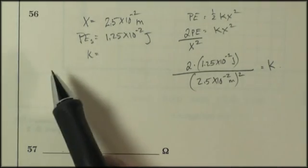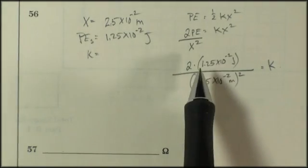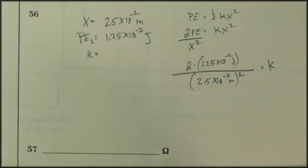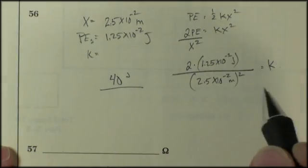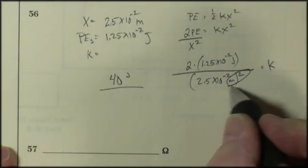All of this is worth one point. The list of knowns, the formula, and the substitution with units. The correct answer is worth another point, and you just need your calculator for that. And the answer I get is going to be 40 joules per meters squared.